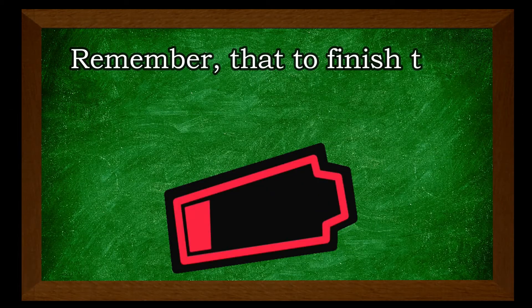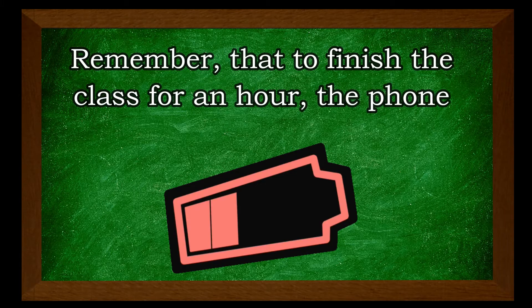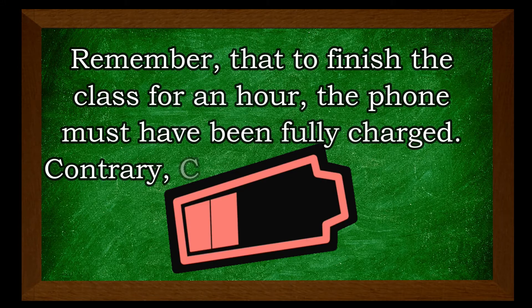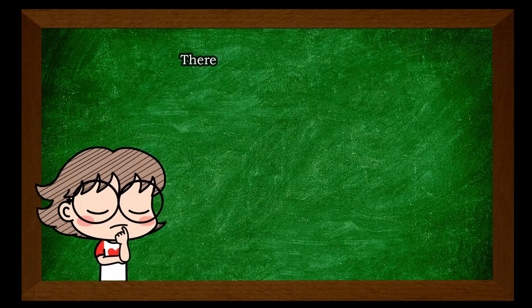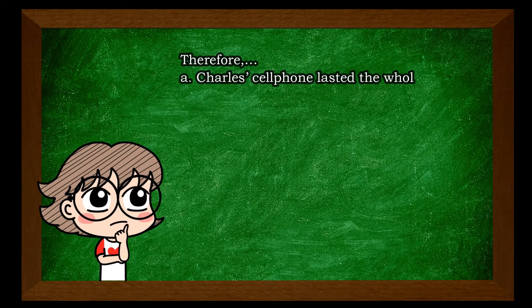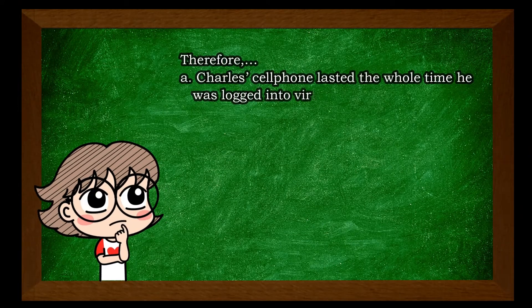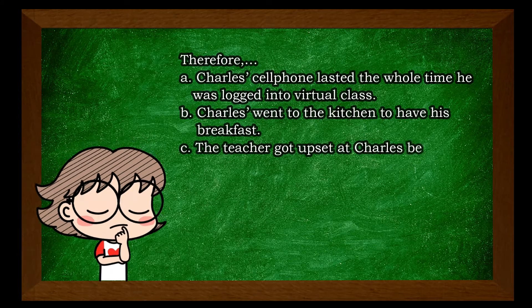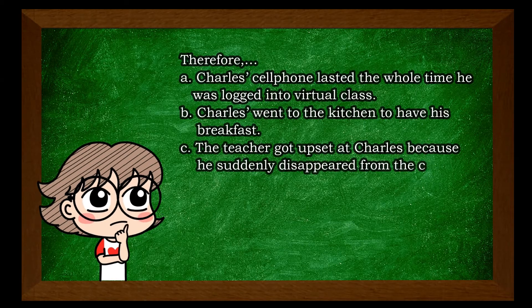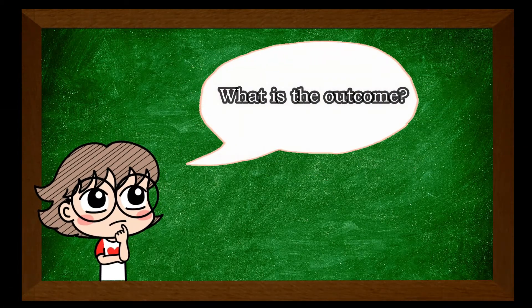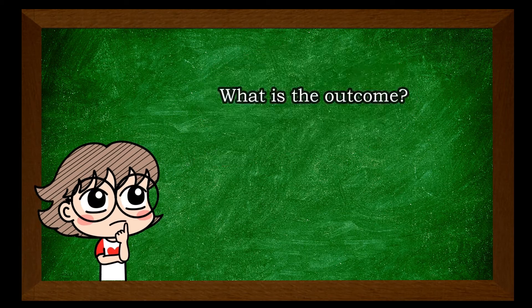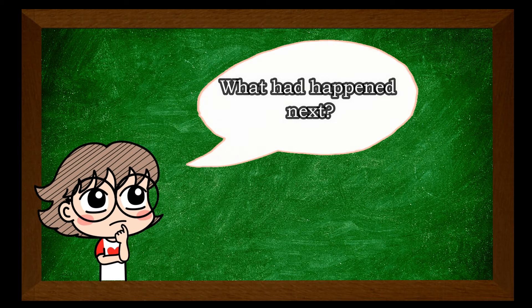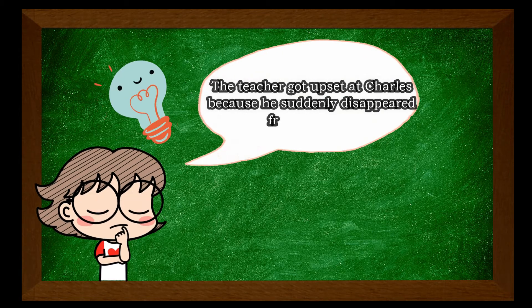It was agreed upon that the class shall be finished in one hour. Remember that to finish the class for an hour, the phone must have been fully charged. Contrary, Charles forgot to do so. Therefore: A. Charles' cell phone lasted the whole time he was logged into virtual class. B. Charles went to the kitchen to have his breakfast. C. The teacher got upset at Charles because he suddenly disappeared from the class. From the given options, let us predict the outcome. The answer is letter C.